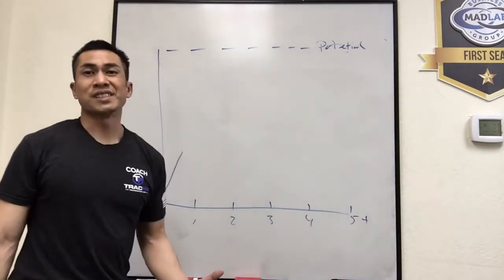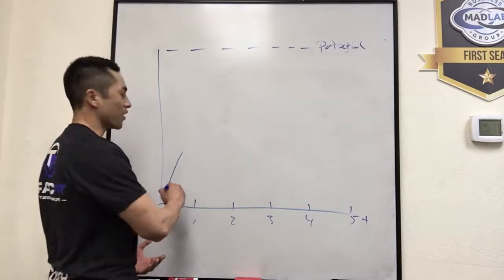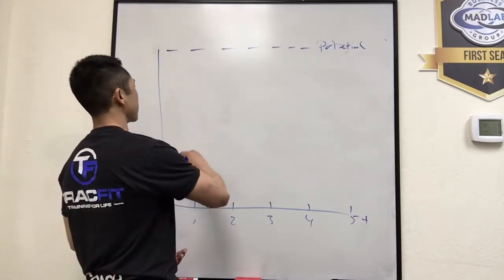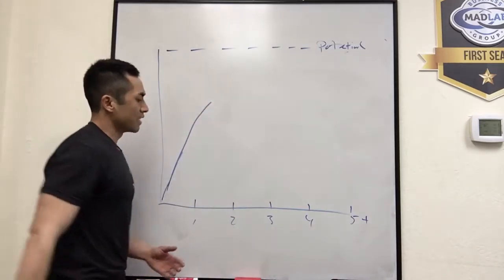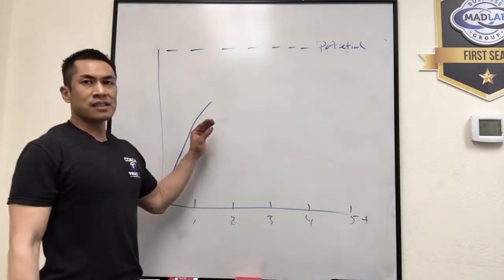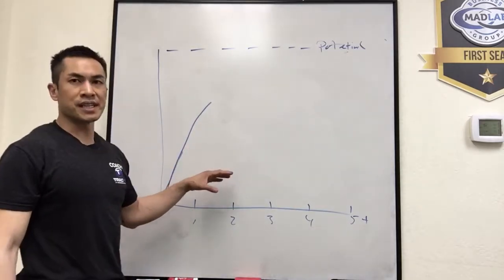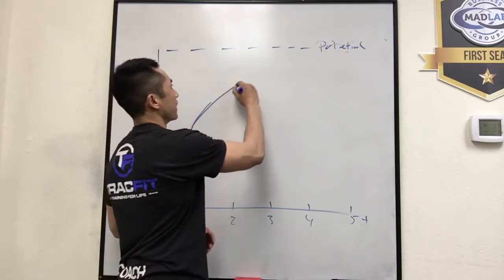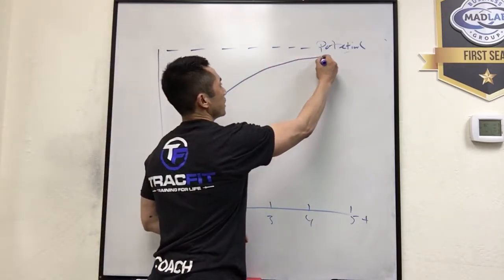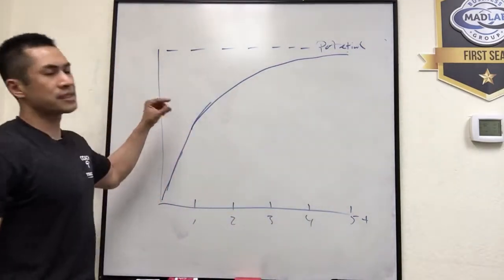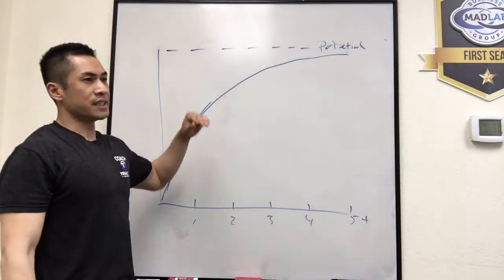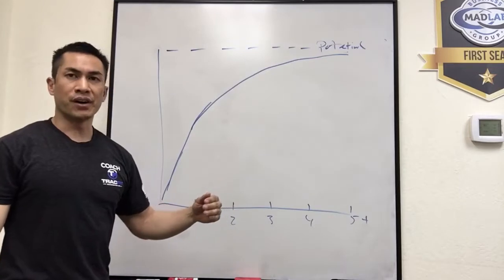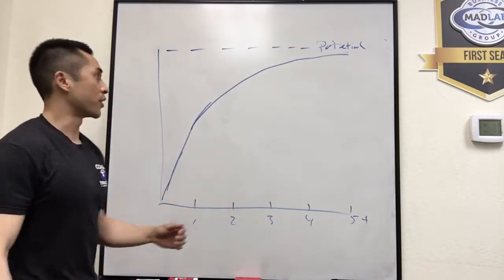Your first year is what we consider your honeymoon phase, and you're going to PR everything. You're going to see so much results, so many gains. And then you're going to start to notice that it's going to start to taper a little bit toward your second year. The further you get down the line, you're going to notice that the closer you get to your potential, you're going to start to see some decreases in the amount that you'll be PR-ing.